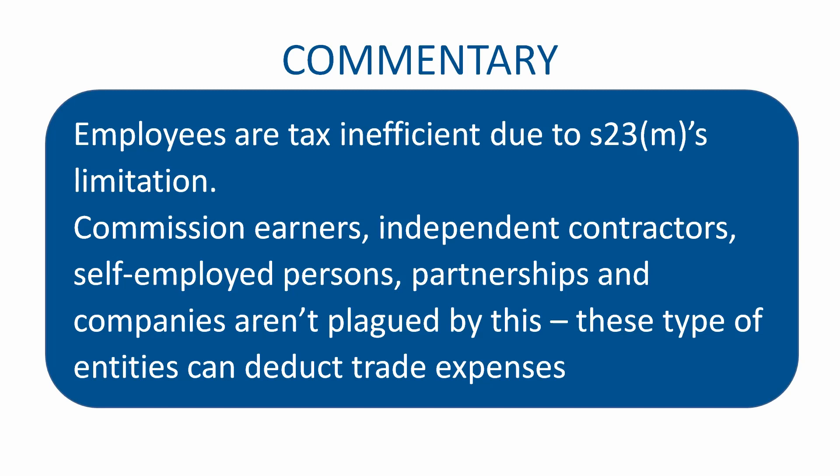Commission earners, independent contractors, self-employed persons, partnerships, companies, and even trading trusts aren't plagued by section 23M and can therefore deduct a lot more expenses, giving them many more tools to pay way less tax than employees ever could. If you have any questions leave a comment below and I'll try to answer them to the best of my ability. I hope you enjoyed this video and I'll see you in the next one. Cheers.